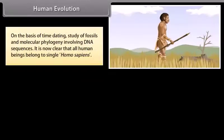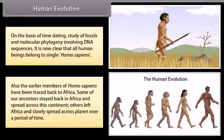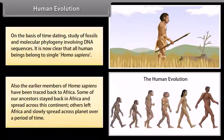On the basis of time dating, study of fossils, and molecular phylogeny involving DNA sequences, it is now clear that all human beings belong to a single species, Homo sapiens. Also, the earlier members of Homo sapiens have been traced back to Africa. Some of our ancestors stayed back in Africa and spread across this continent. Others left Africa and slowly spread across the planet over a period of time.